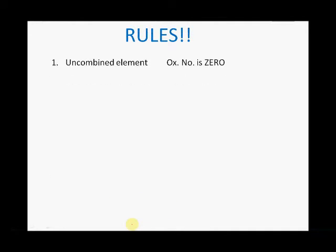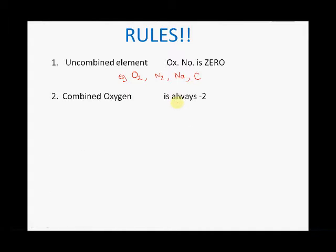We have some rules for working out oxidation numbers. Rule one: in an uncombined element, the oxidation number is zero. So in oxygen O₂, the oxidation number of each atom is zero. In nitrogen N₂, that's zero also. Sodium metal by itself, uncombined, is zero, and the same for carbon. Any element by itself is going to be zero.